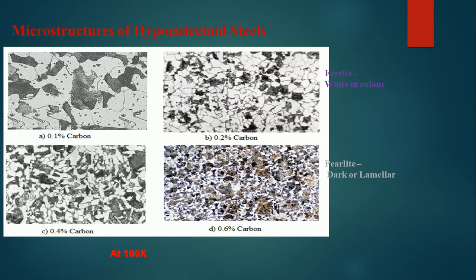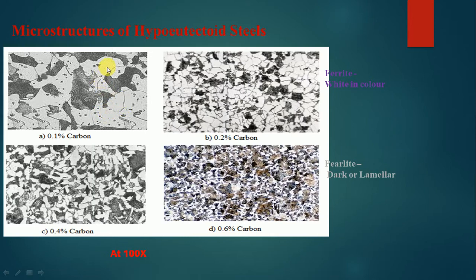Microstructurally, how does hypo-eutectoid steel appear? These scan pictures at 100x magnification represent 0.1%, 0.2%, 0.4%, and 0.6% carbon compositions. Ferrite is white in color, and clearly at 0.1% carbon the ferrite percentage is more.